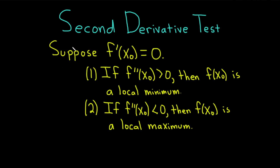Here you see the second derivative test. It says suppose that f prime of x0 is equal to 0. There are two conditions. The first says if the second derivative is positive at x0, then f of x0 is a local minimum — also called a relative minimum. The second condition says if the second derivative at x0 is less than 0, then f of x0 is a local maximum, also called a relative maximum.